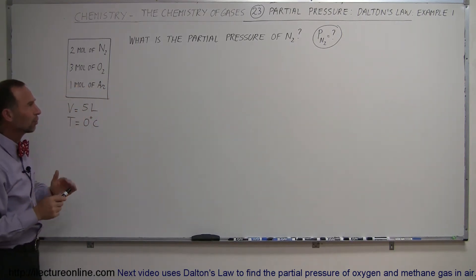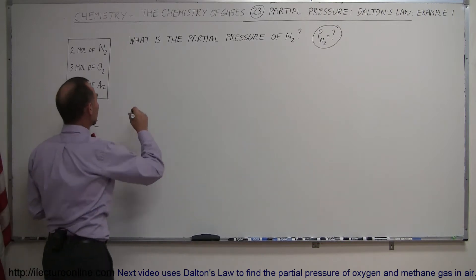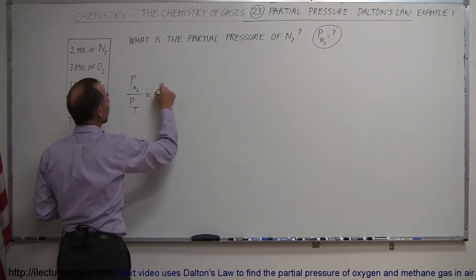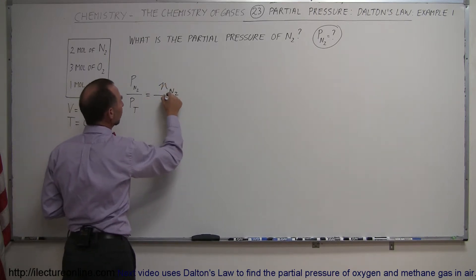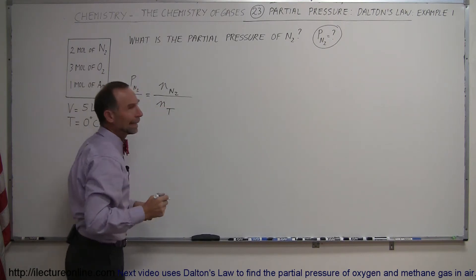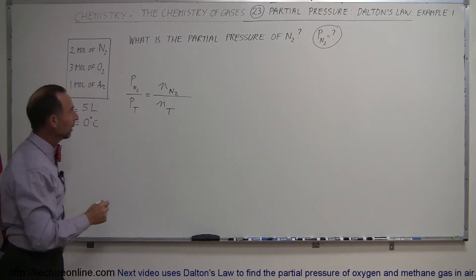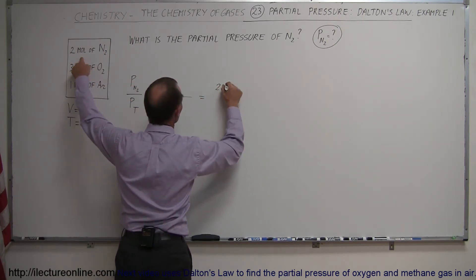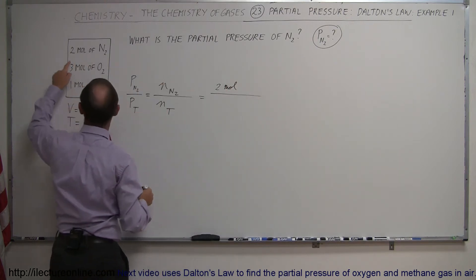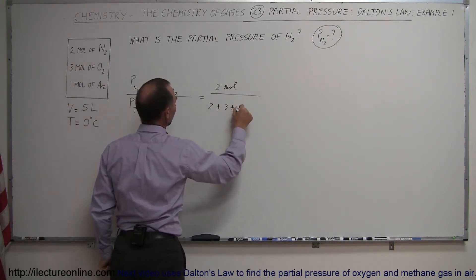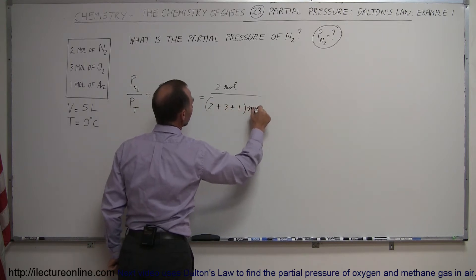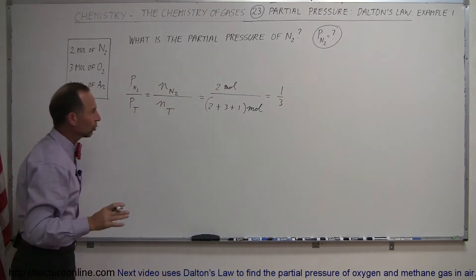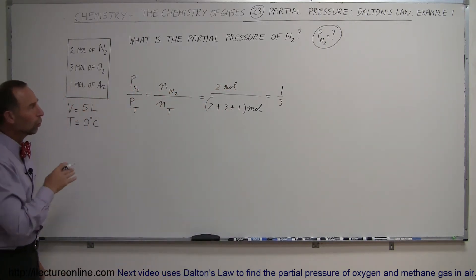Well, the first part, we'll just go ahead and use Dalton's Law. We can say that the partial pressure as a ratio of the total pressure is simply equal to the number of moles that we have of the gas in question, which is nitrogen, divided by the number of moles total in the gas. That would then be equal to, we have 2 moles of nitrogen, and we divide it by the total, which would be 2 plus 3 plus 1 mole, which is 2 divided by 6, which is 1 third. So the partial pressure of the nitrogen gas is 1 third the total pressure.